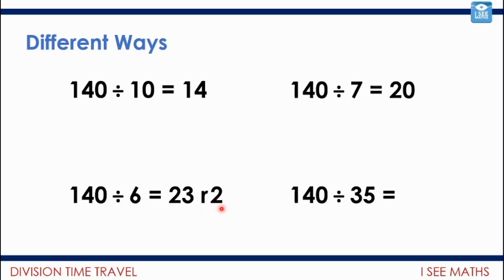Whereas this one might look the most difficult: how many 35s in 140? What's 140 divided by 35? Actually it's just 4. If I count up in 35s: 35, 70, and then another 2 lots of 35, that means I've got 4 lots of 35 in 140. So they're quite different in my approaches there.